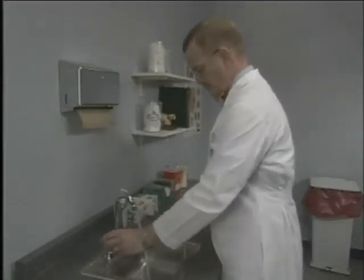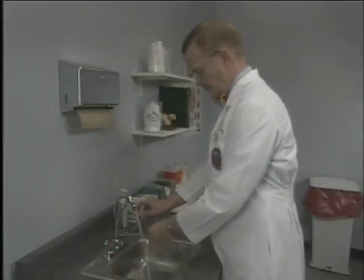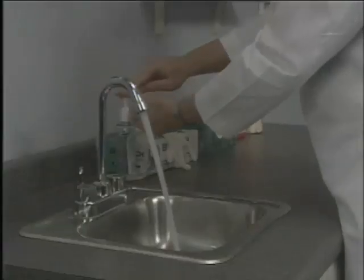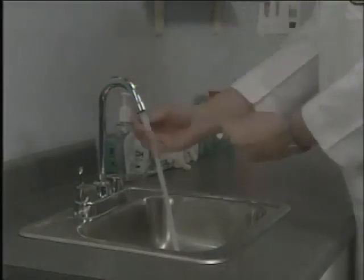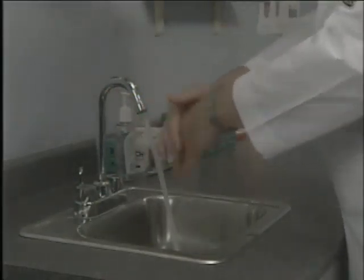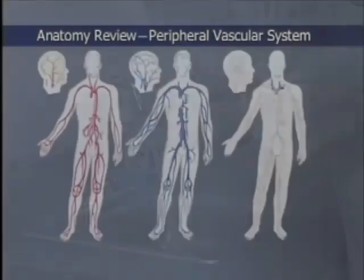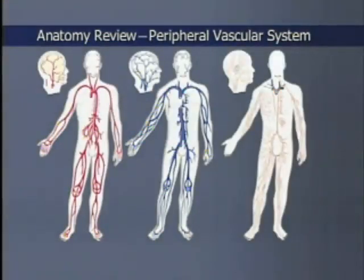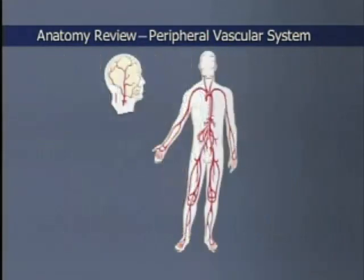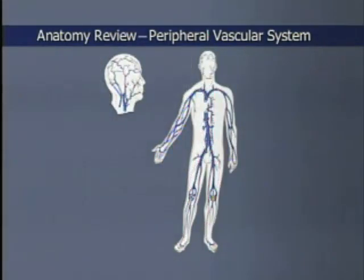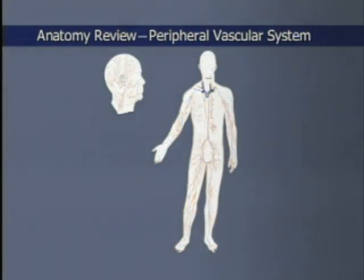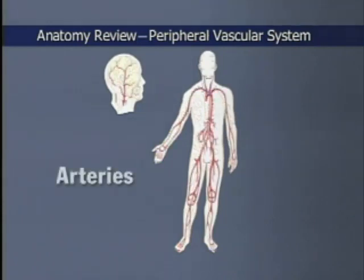With the patient's health history in mind, you are now ready to continue your examination. Let's briefly review the anatomy of the peripheral vascular system. The peripheral vascular system consists of the various structures involved in circulation to the arms and legs, including the arteries, the veins, the capillary bed that connects them, and the lymphatic system with its lymph nodes. Arteries carry oxygenated blood away from the heart.